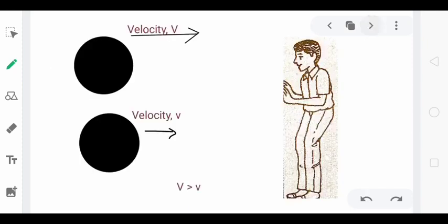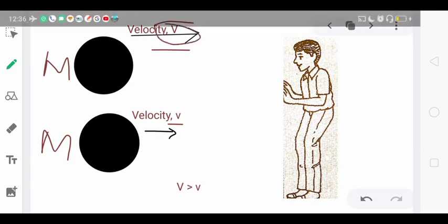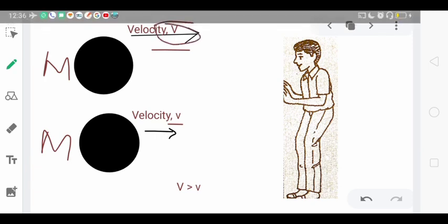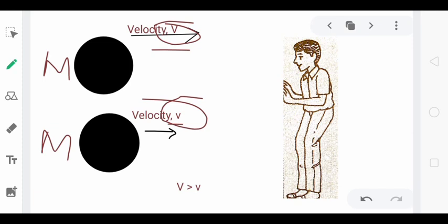Now let's look at another case. Here there are two balls, but the mass of both is the same. In the previous case the mass was different and velocity was the same. But in this case, the mass is the same and the velocities are different. One ball is moving with capital V velocity and the other with small v velocity, and it is given that capital V is greater than small v.